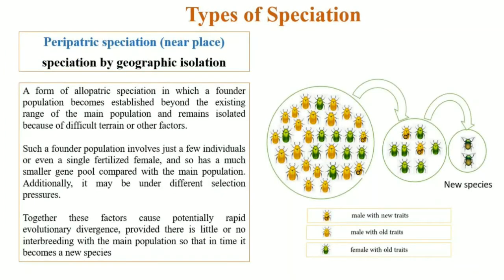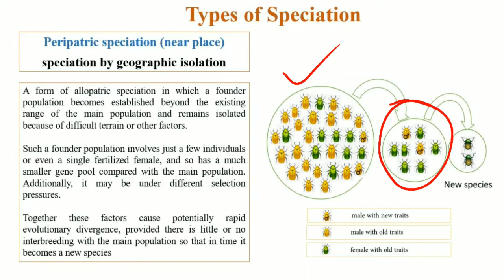Next is peripatric speciation. Peripatric speciation is also a type involving geographical isolation, but here a small group of individuals separates from the parent population. This is called the founder population, and the number of individuals is very low — in some cases even a single fertilized female can start a new population. Because the population size is very small, any mutations that occur will have a far-reaching effect compared to a larger population.